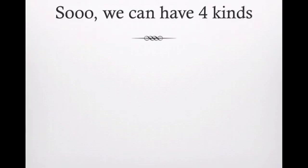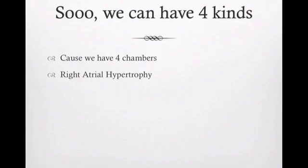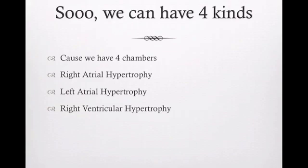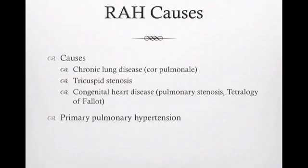When we're talking about hypertrophy on the EKG, we've got to keep in mind we have four kinds - four different chambers. Each chamber can develop hypertrophy, so we can have right atrial hypertrophy, left atrial hypertrophy, right ventricular hypertrophy, and left ventricular hypertrophy. You'll also see this written in books as atrial enlargement. For the ventricles, you're always going to see it written as hypertrophy.